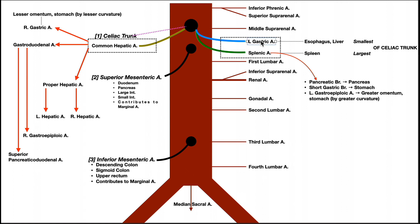The left gastric artery supplies the lower part of the esophagus and some of the liver. Though 'gastric' often refers to the stomach, here it refers more broadly to the digestive tract. It is the smallest branch of the celiac trunk. The splenic artery supplies the spleen and is the largest branch of the celiac trunk.